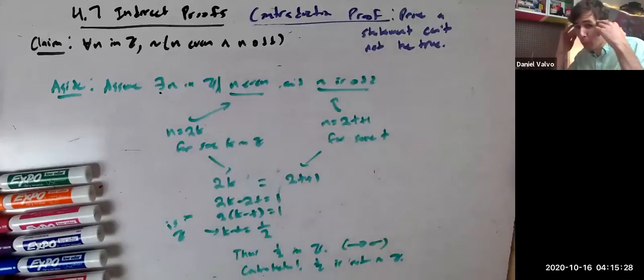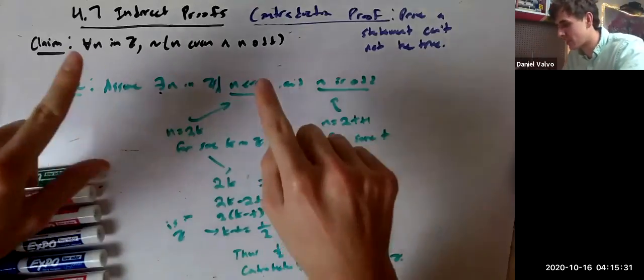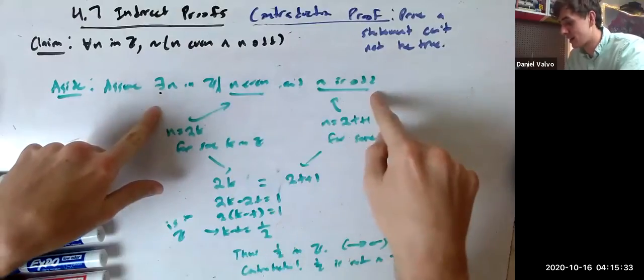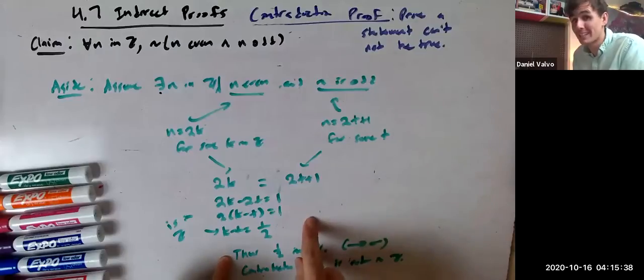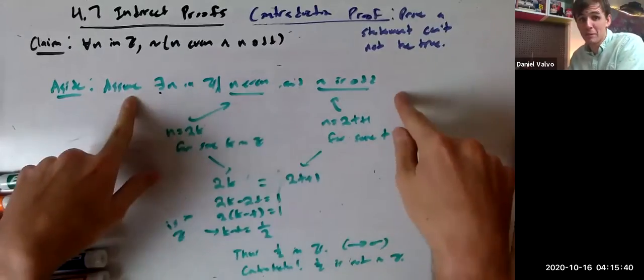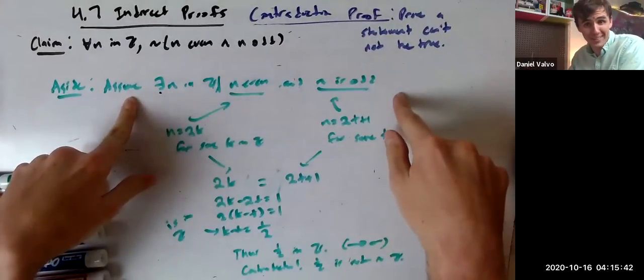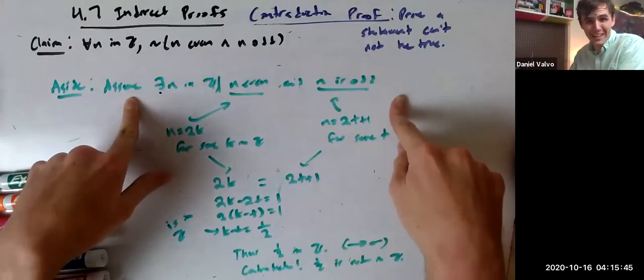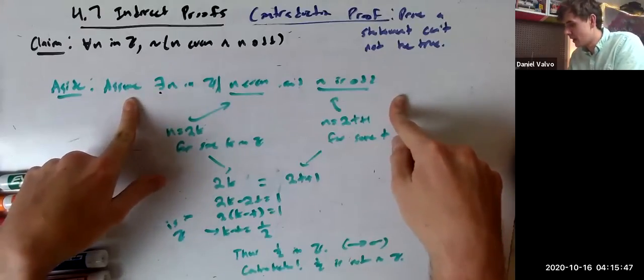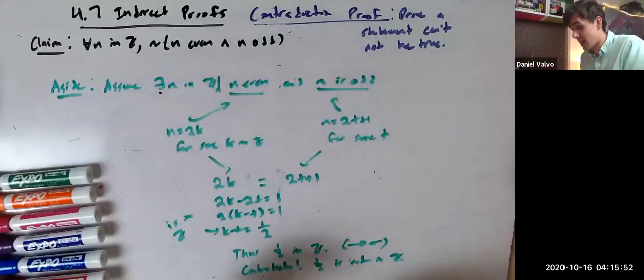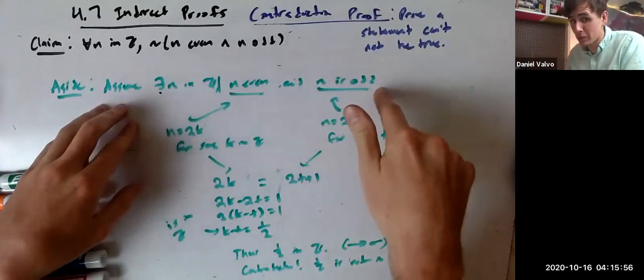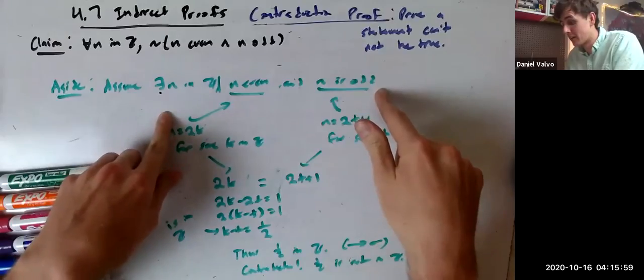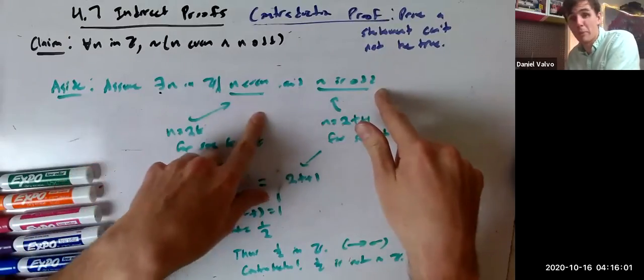The contradiction we got is we showed that 1/2 is an integer, even though we know 1/2 is not an integer. We just proved something ridiculous. If you start with the assumption that there exists an N that's even and odd, then you can prove 1/2 is an integer. But because 1/2 is not an integer, that assumption must be wrong. Otherwise, math would break. This assumption must be wrong, so the opposite must be true. Meaning for all N, N is not both even and odd.